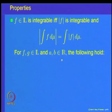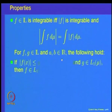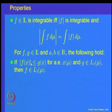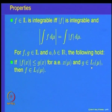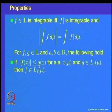Let us recall some other properties we proved. If f and g are measurable functions and |f| is less than or equal to g(x) for almost all x with respect to mu, and g is integrable, then f is also integrable. That means if a measurable function f is dominated by an integrable function, then f automatically becomes integrable.